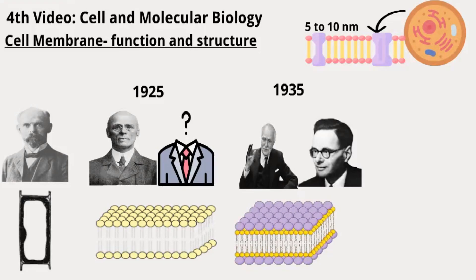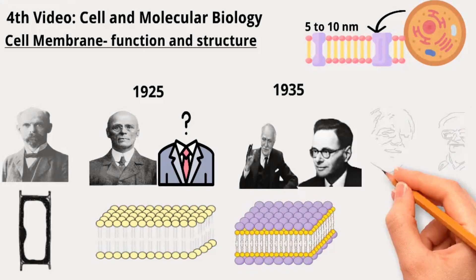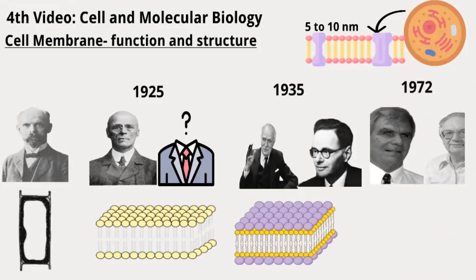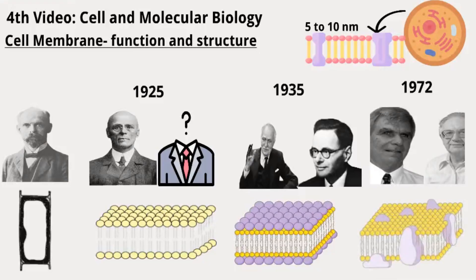In the late 1960s, a new concept emerged. The fluid mosaic model, proposed by S. Jonathan Singer and Garth Nicholson in 1972, became widely accepted. It views the lipid bilayer as a fluid structure with proteins distributed like a mosaic throughout. This model portrays cellular membranes as dynamic and capable of various interactions. This dynamic view has been supported by evidence, making it the central dogma in membrane biology, and highlights the flexibility and mobility of membrane components.